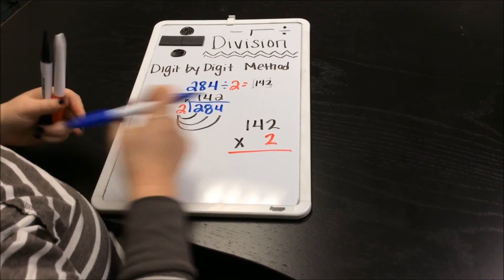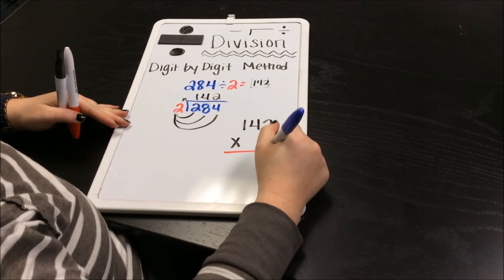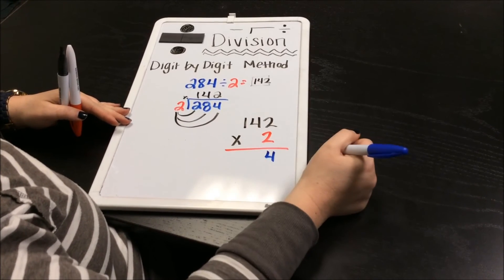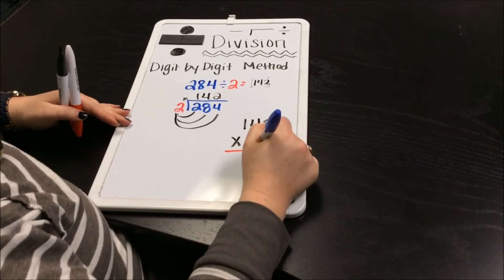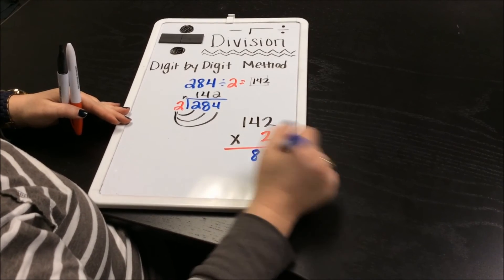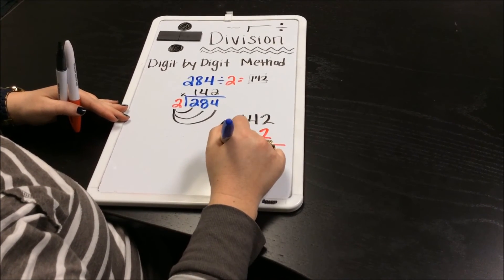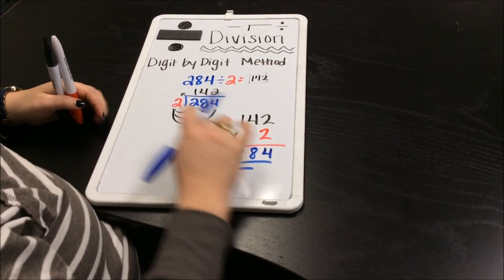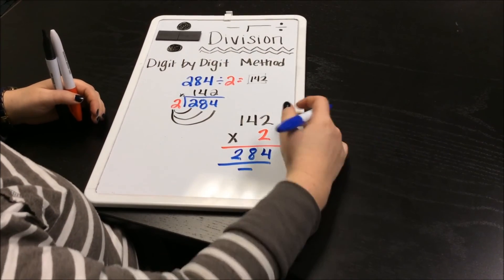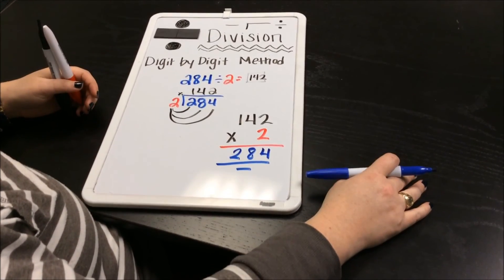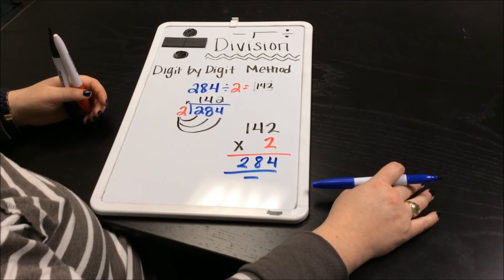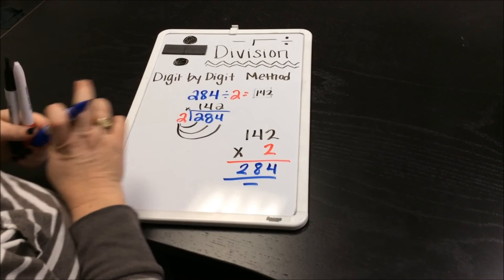2 times 2 is 4, 2 times 4 is 8, and then 2 times 1 is 2. So it does get us to that, and all of our numbers, they work. That is the digit by digit method, and I hope you like it. Thanks!